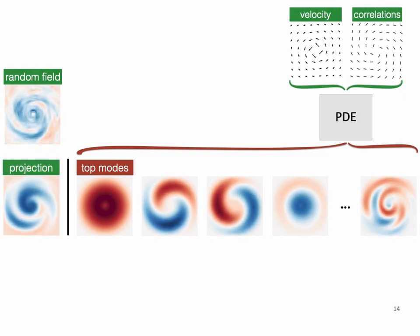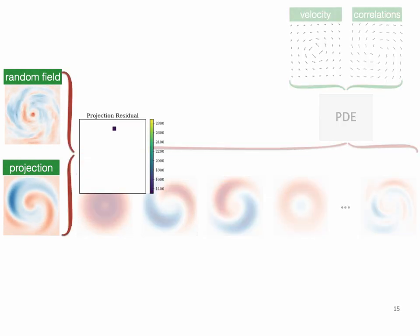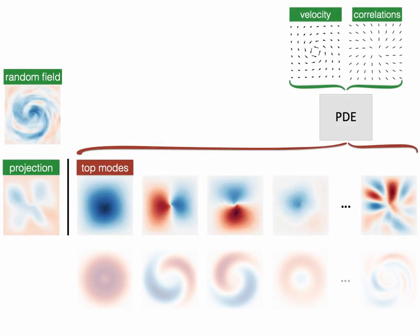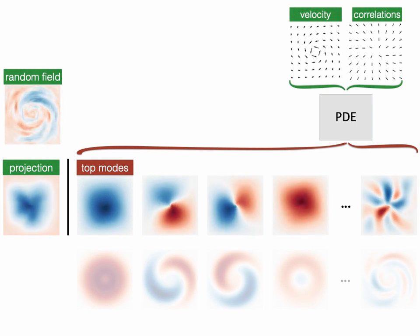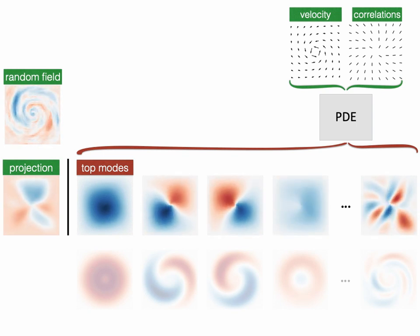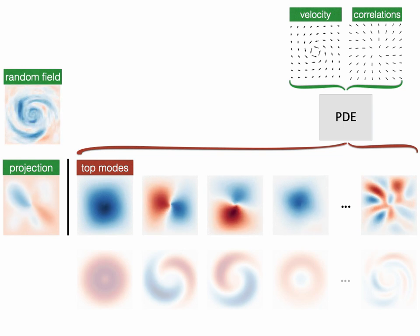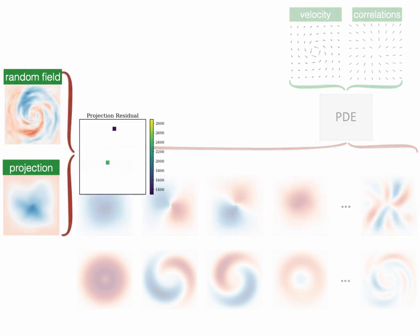We compute the projection of the random field onto a subspace spanned by these modes. If the subspace represents the random field well, the projection residual will be small. Parameters that are different from those that generated the random field will result in a subspace that does not capture the random field well. Therefore, the projection residual will be high.